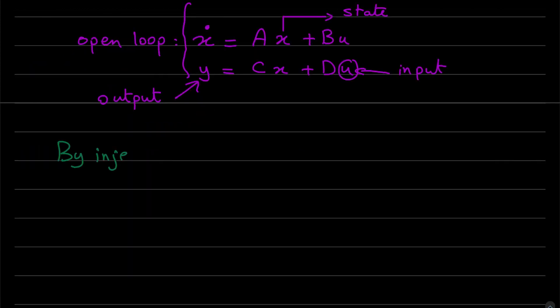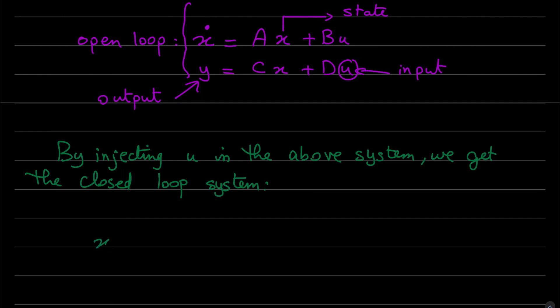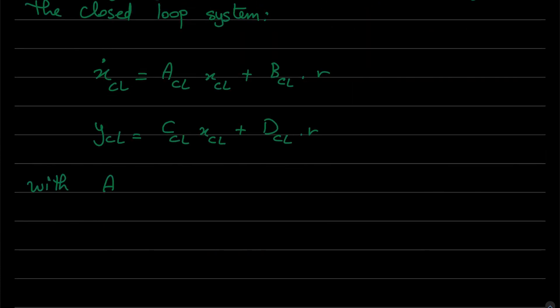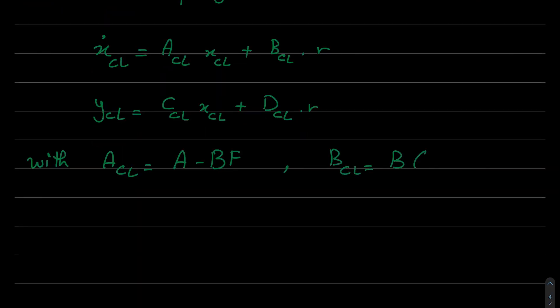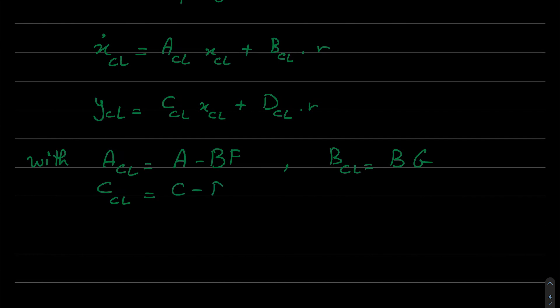By injecting u in the above equations, we get the closed loop system equations. x dot closed loop, a closed loop, b closed loop, with respect to r, u closed loop, c and d. With a is given a minus b f, b closed loop is b times g, and c closed loop and d closed loop.